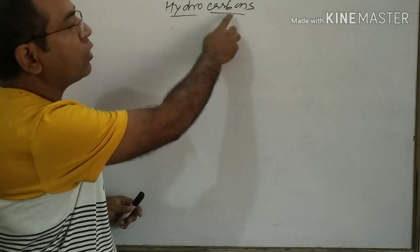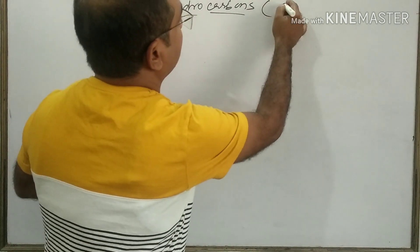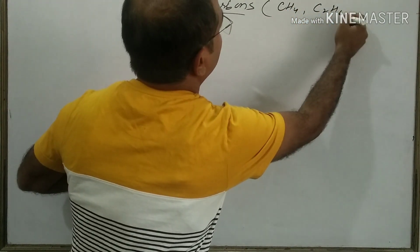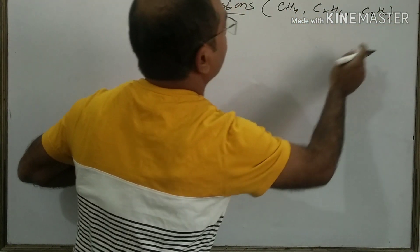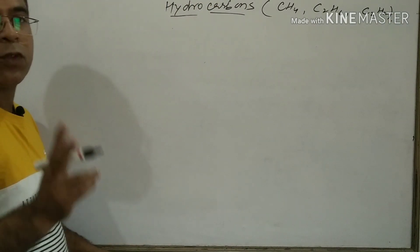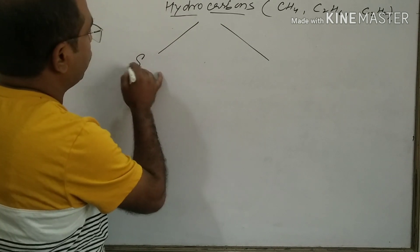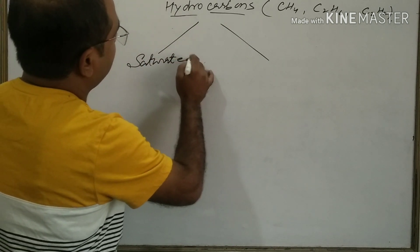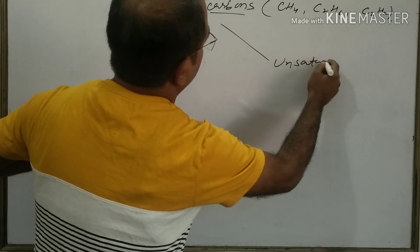Hydrocarbons contain hydrogen and carbon — 'hydro' for hydrogen and 'carbon' for carbon. There are many examples like methane (CH4), ethane (C2H6), and acetylene (C2H2). Hydrocarbons are of two types: the first is called saturated hydrocarbon, and the second is called unsaturated hydrocarbon.